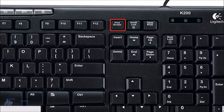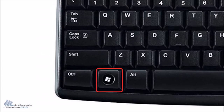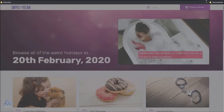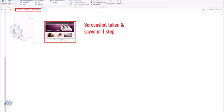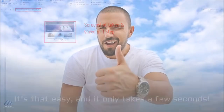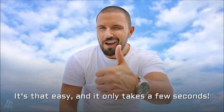The print screen key is typically in the upper right area of the keyboard, and the Windows key is usually found in the lower left. When you hit these two keys, the screen will dim for a bit and the screenshot is taken and saved to the default screenshots folder in the pictures library. It's that easy and it only takes a few seconds.